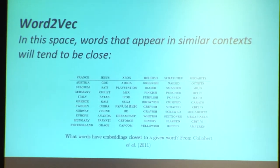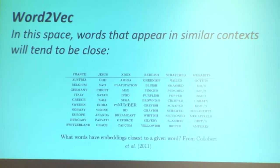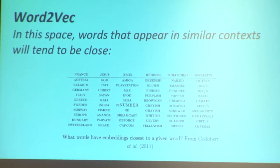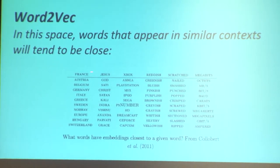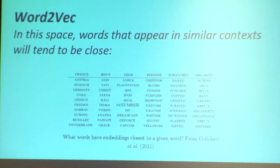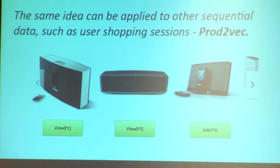Why is this relevant to recommendation? The first papers on Word2Vec looked at the resulting representations to see what they do. What we think is interesting for product recommendation is that when you do cosine similarity in this new space, for example for the word France, the closest words are other European countries; for Jesus, other gods; for Xbox, other types of consoles. It seems to be a reasonable representation for semantic similarity. People then realized they could do the same trick on different types of sequences, for example product-shopping sequences — a view of a product, a view of a second product, and a sale of a third product.